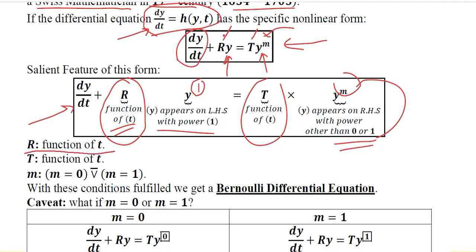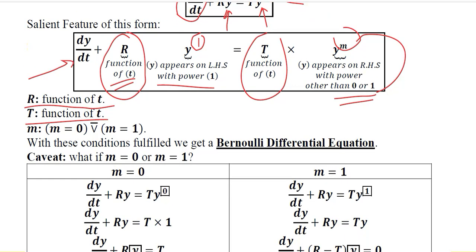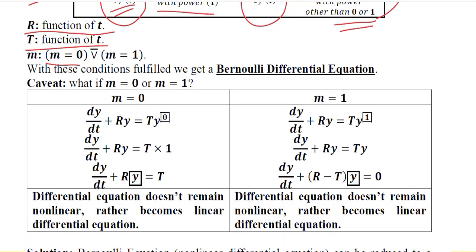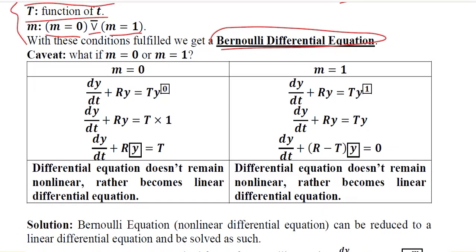So r is a function in terms of time, T is a function in terms of time, and m is neither 0 nor 1. If we violate this condition, we will not get a Bernoulli's equation. So if these conditions are met, we get a Bernoulli equation. What happens when m equals 0 and when m equals 1? This is an undesired situation we want to address.